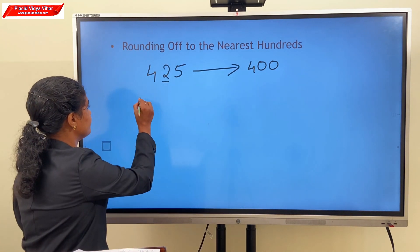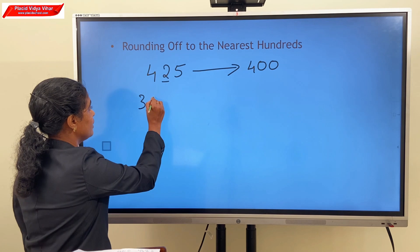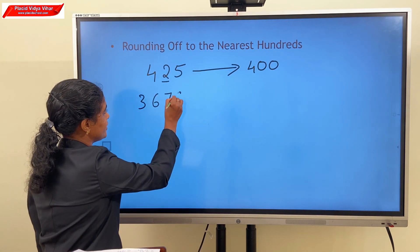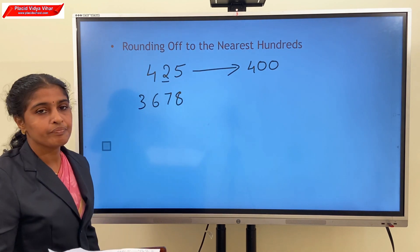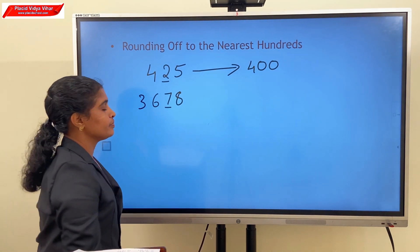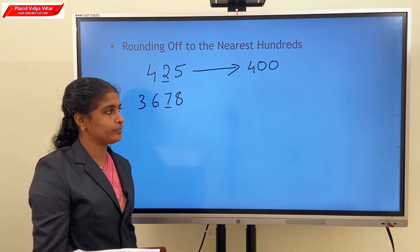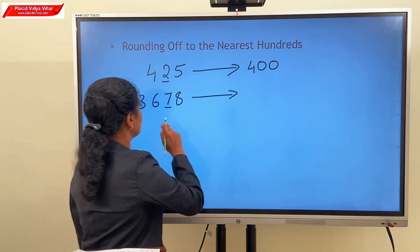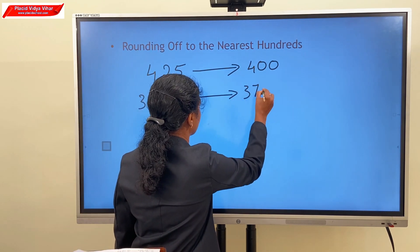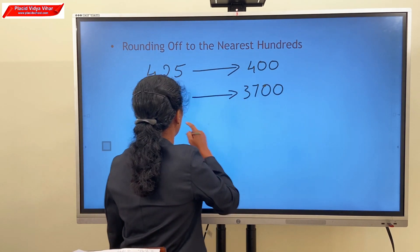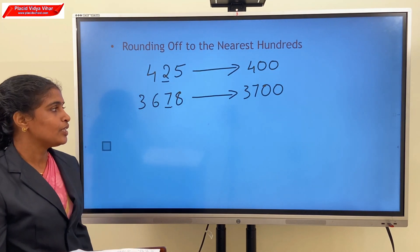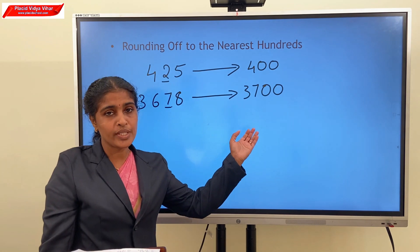Consider another example: 3,678. Here the tens digit is 7, which is greater than 5. So we round off the number to 3,700. We add 1 to the hundreds place. So our answer is 3,700.